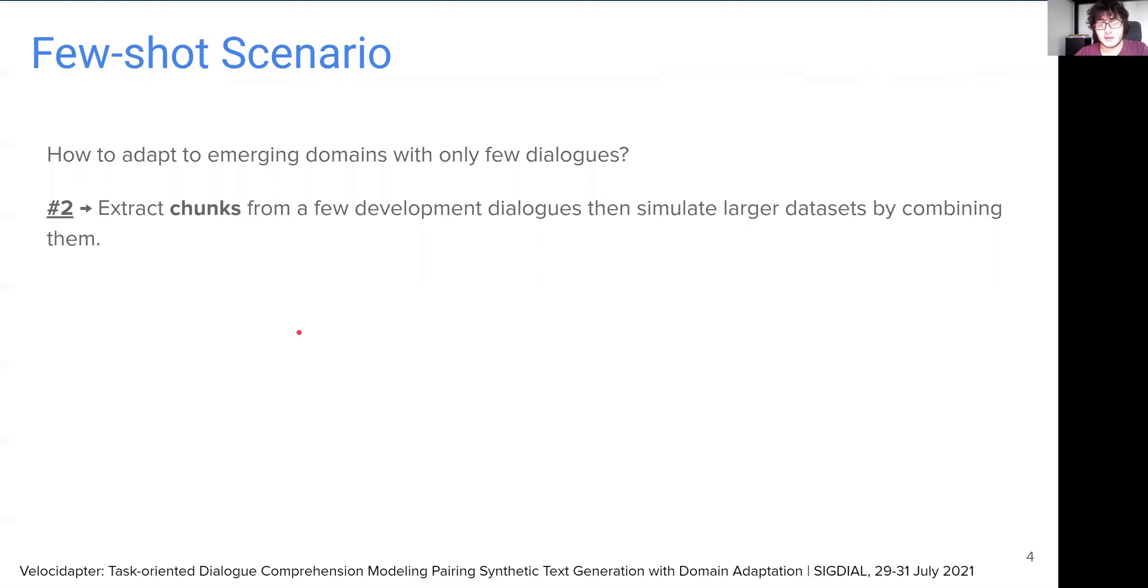The second research question we tackle is how to adapt into emerging domains with only few dialogues. In order to solve this issue, we introduce a new framework, VelocAdapter, which, given a number of dialogue chunks, can simulate large dialogue comprehension datasets.